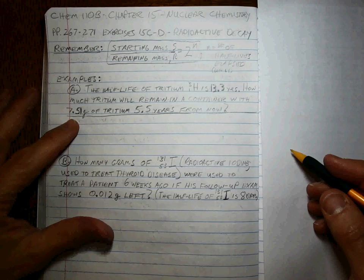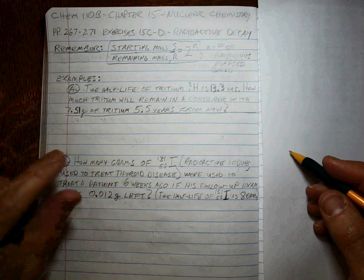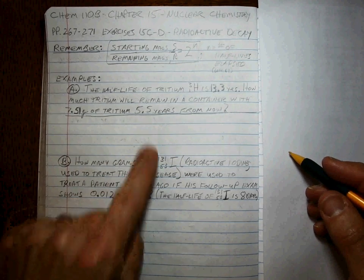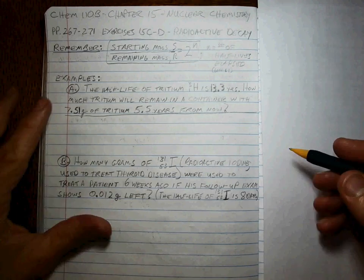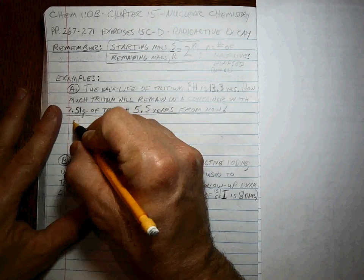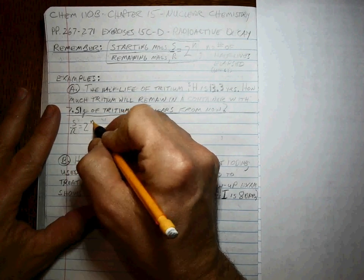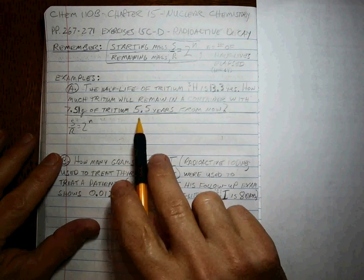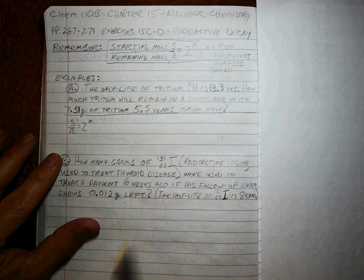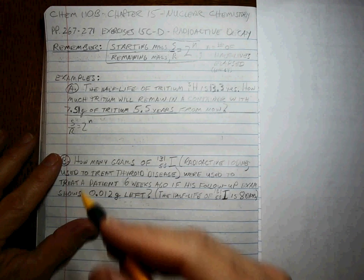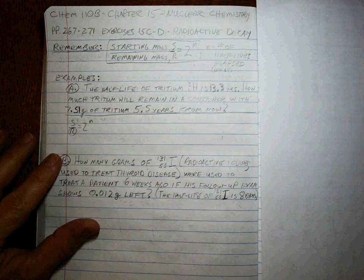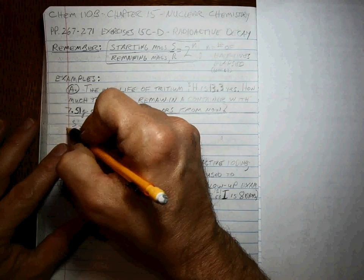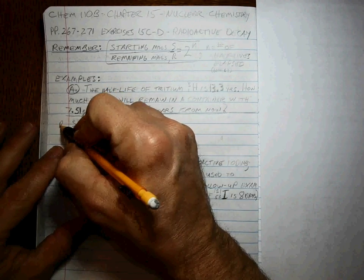If we know we have 7.51 grams now, how much will be there 5.5 years from now? If we're looking at starting over remaining is equal to 2 to the N. How much is left 5.5 years from now? How much is remaining? So we're solving for R, right? So let's solve for R. Multiply both sides by R, divide both sides by 2 to the N.